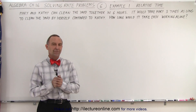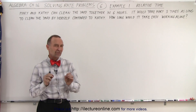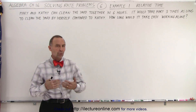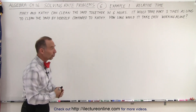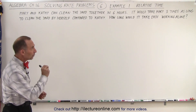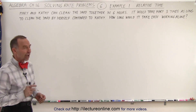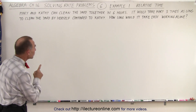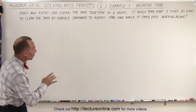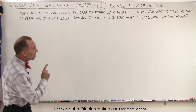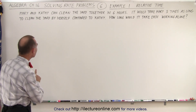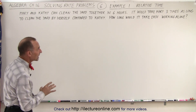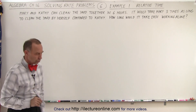Welcome to our lecture online. Here we have a slight twist on our original problem — the original way of solving these types of rate problems is when we're dealing with relative time. Notice that we have Mary and Kathy can clean the yard together in six hours, but it would take Mary three times as long to clean the yard by herself compared to Kathy. How long would it take each of them working alone?